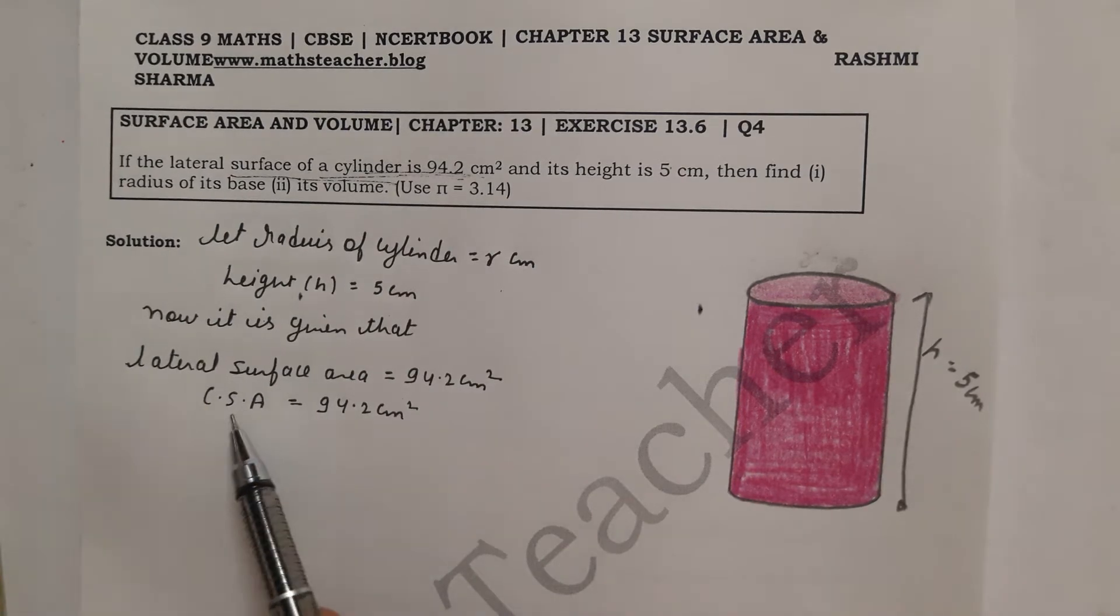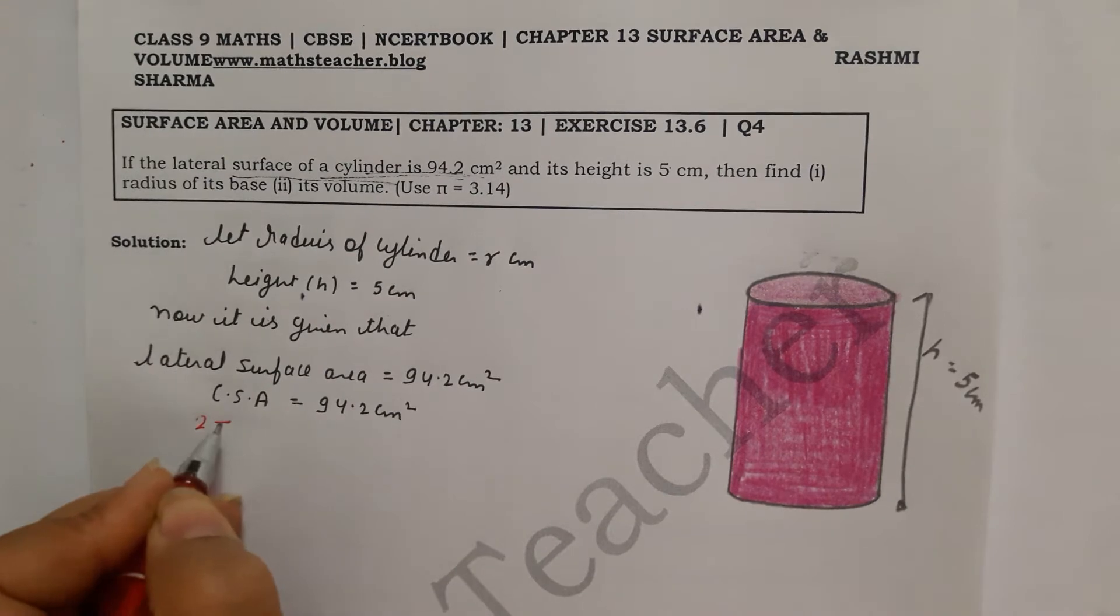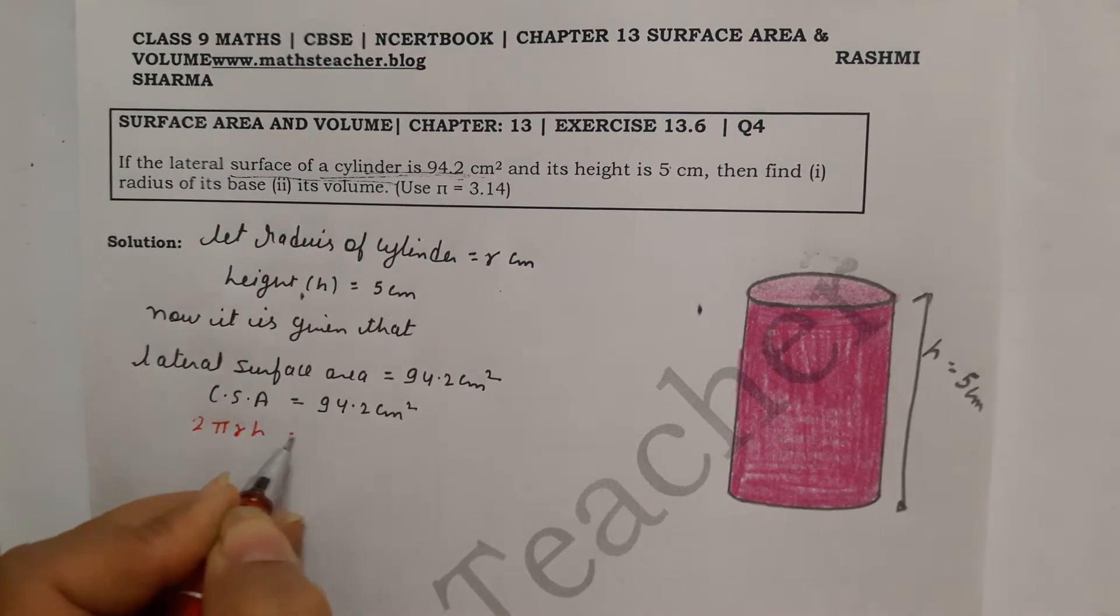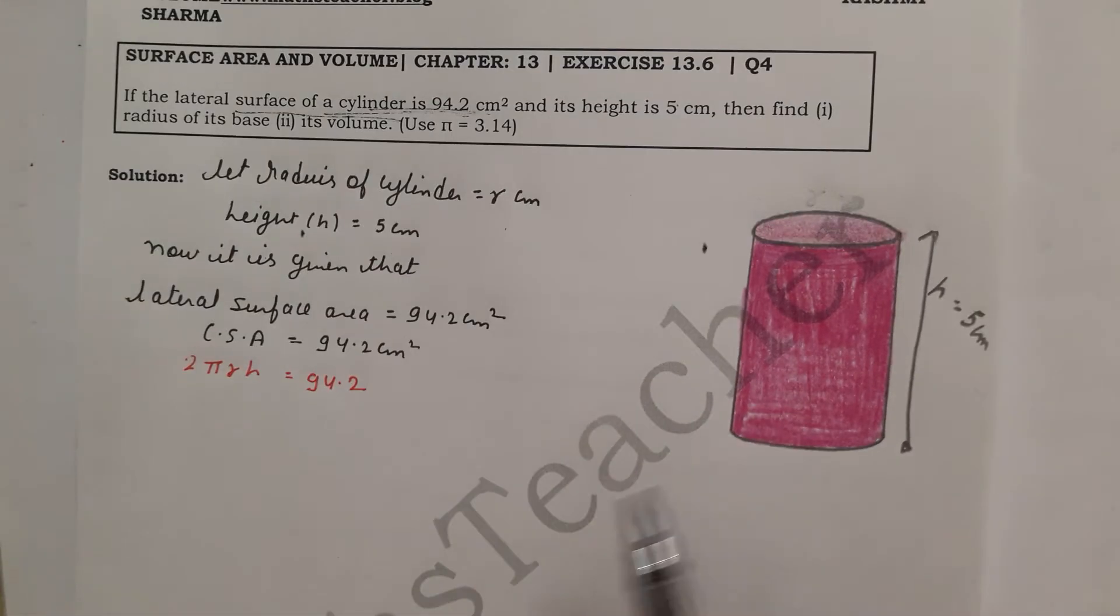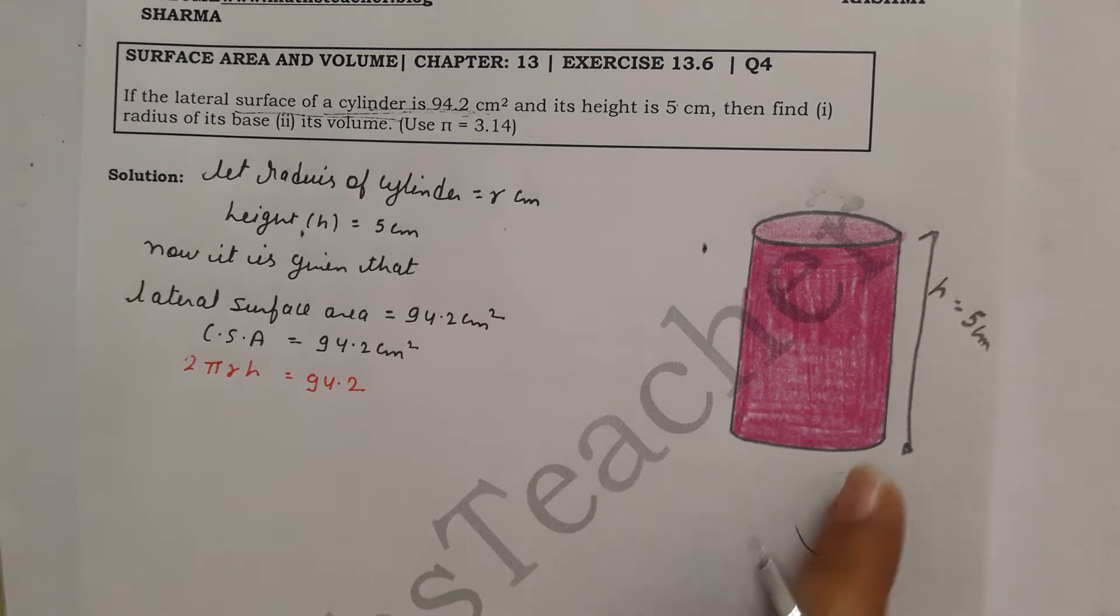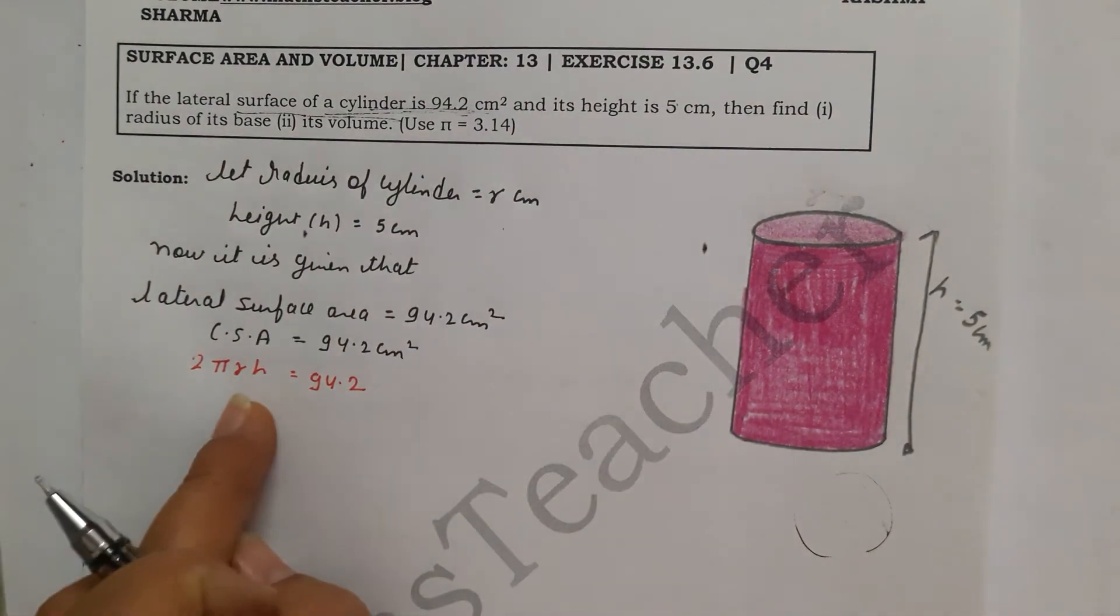Now you have given curved surface area, so the formula is 2πrh. You have given 94.2, so 2πrh which comes from this circle on the border, on the edge. Height and the perimeter of the circle, the formula is 2πr, and since there is height we have to multiply the height.